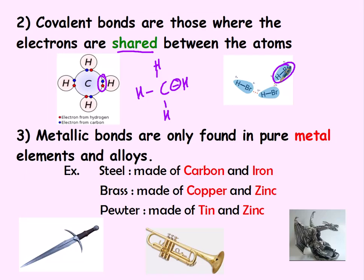Metallic bonds are found in pure metal elements and alloys. For metallic bonds, if you see any names like steel, brass, or pewter — those common names — those are alloys.